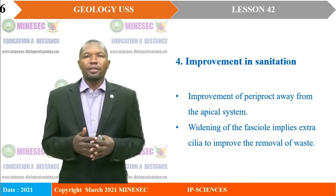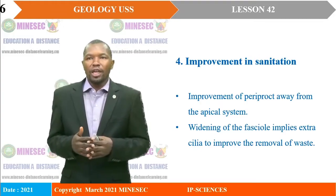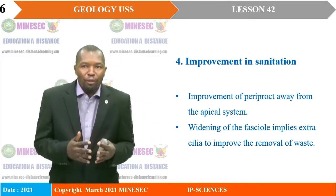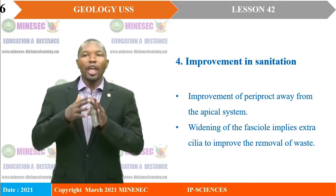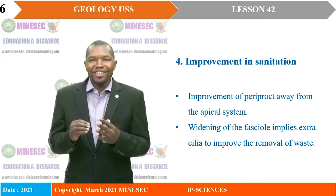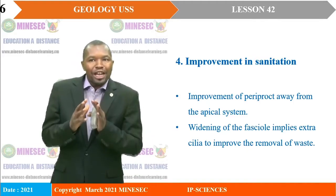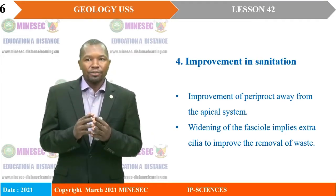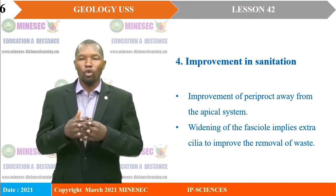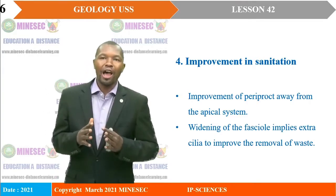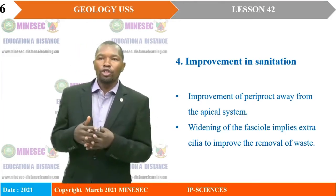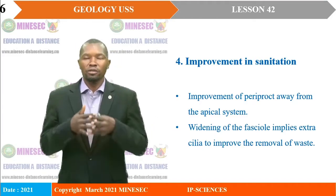The fourth significance is the improvement in sanitation. The movement of the peripod away from the apical system, as well as the widening of the fasciole, implies that the excretory cilia have been improved and assist in the removal of waste. These are the significances involved in the evolutionary changes in fossil microstats.